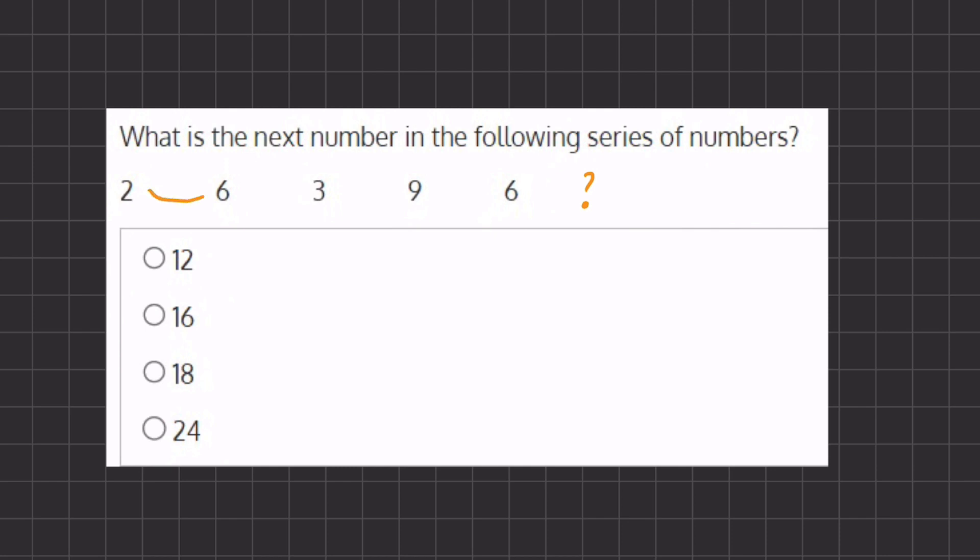So let's take a look at our first transition. From 2 to 6, it seems like we are adding 4. From 6 to 3, we are subtracting 3. From 3 to 9, we are adding 6. And from 9 to 6, we are subtracting 3 again.